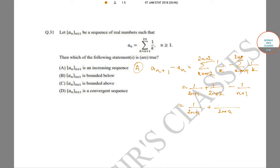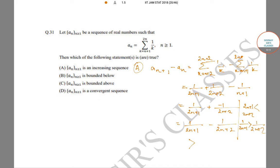This simplifies to 1/(2n+1) minus 1/(2n+2). Now since 2n+1 is less than 2n+2, we have 1/(2n+1) is greater than 1/(2n+2), so this difference is always positive. Therefore our sequence is increasing, so statement A is correct.